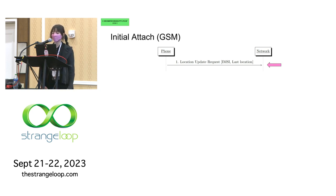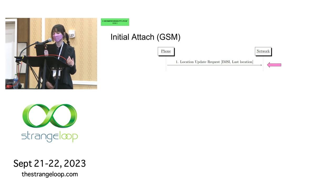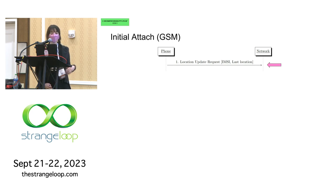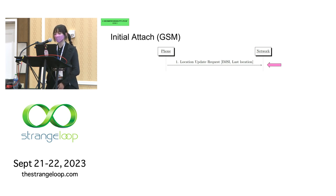Now begins the process of negotiating with the cell tower you previously found. We call the first time you attach to a new tower without having immediately been connected to another one right before the initial attach. For example, if you're on a train and hopping between cell towers, that would be a handover — not the initial attach. The first thing that happens is the phone modem sends a location update request, declaring to the network: I'm here, here's my identification number, and here's the last cell tower I was connected to.